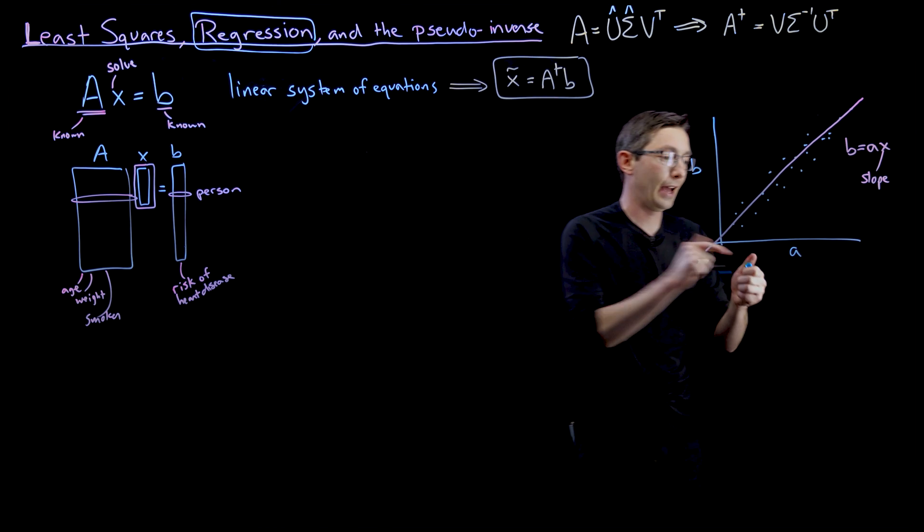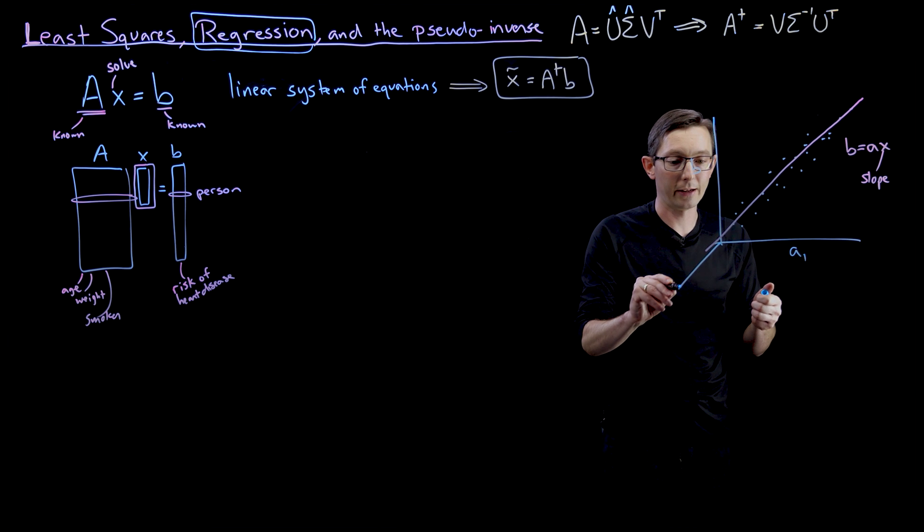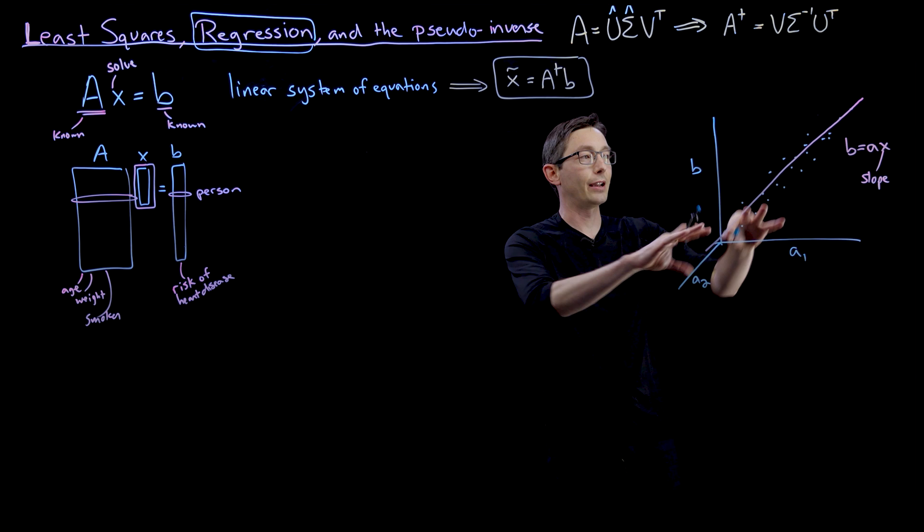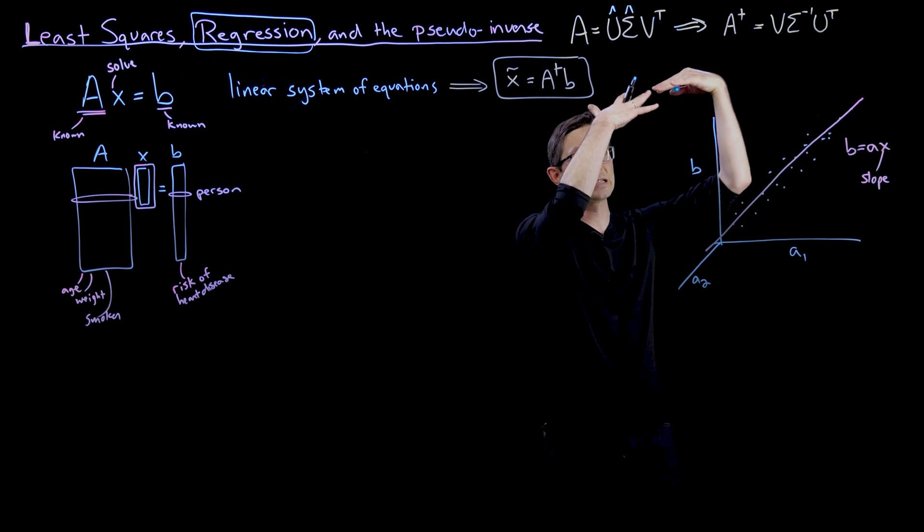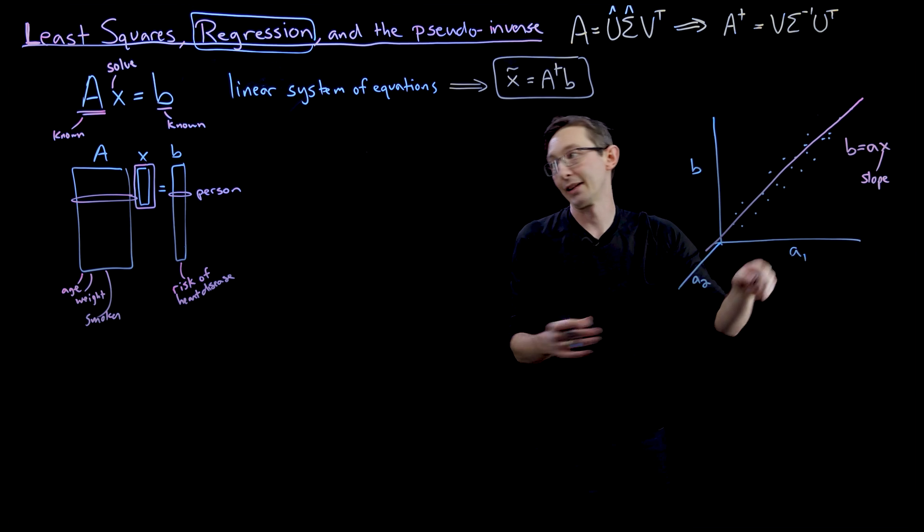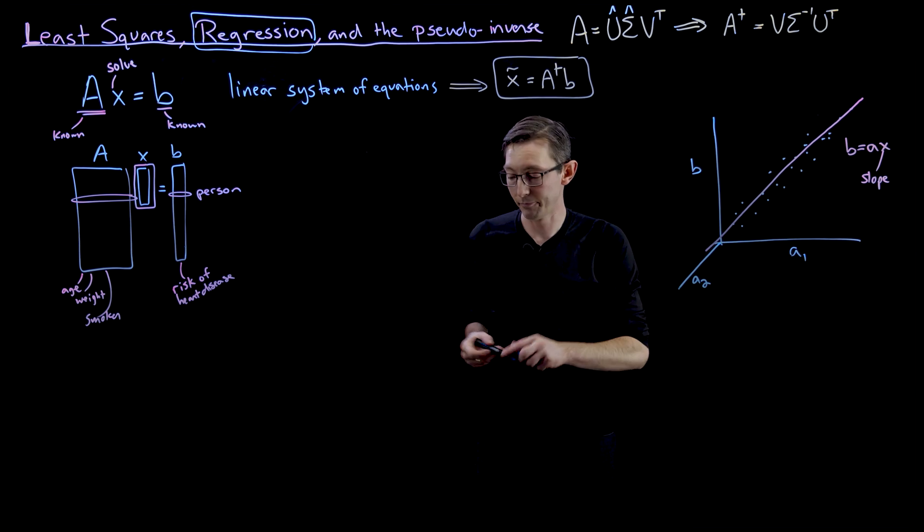So in general, I could have, you know, factor one, and I could have factor two, and factor three, and four, and five, and I could build this, instead of a best fit line, I could find a best fit plane that models B as a function of these input factors, the columns of my A matrix.